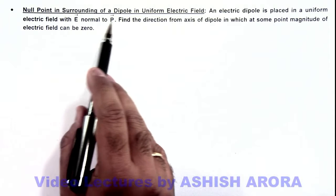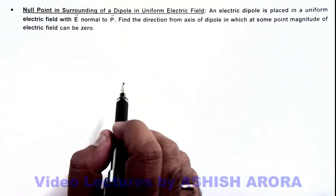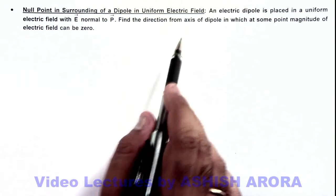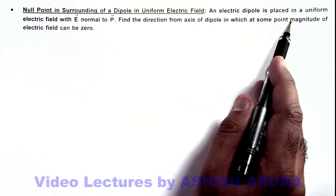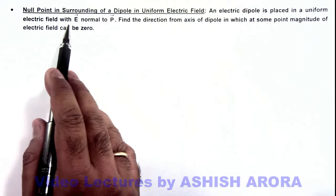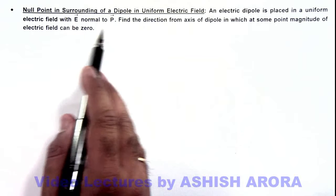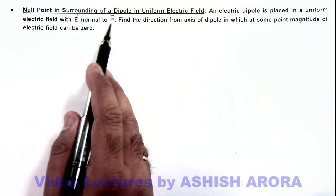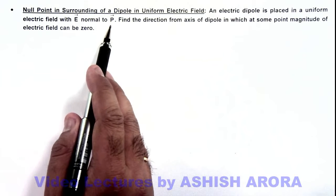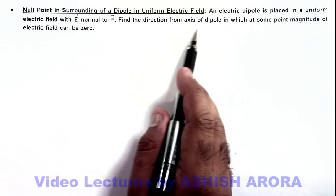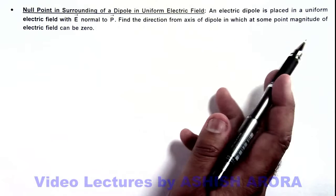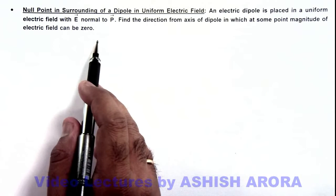In this illustration, we are going to calculate the null point in the surrounding of a dipole in a uniform electric field. The situation given is: an electric dipole is placed in a uniform electric field with E vector normal to P vector, which is the dipole moment of the dipole. We are required to find the direction from the axis of the dipole in which the magnitude of electric field can be zero at some point.